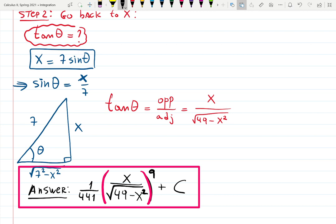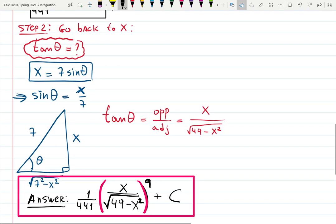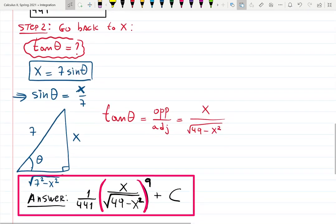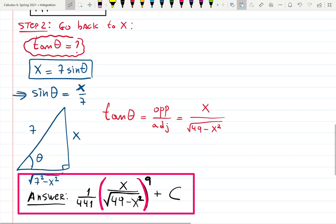Basically we did three different things here. We used a substitution and then we simplified. Then we used u-substitution at the very end, and then a triangle to go back to the original variable. And that is an example. Good job for watching the whole video. See you next time. Bye.